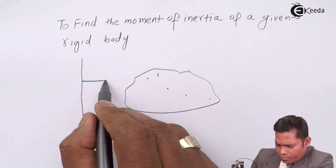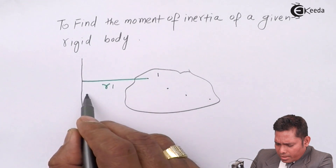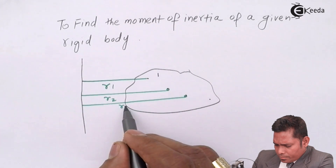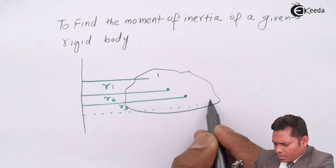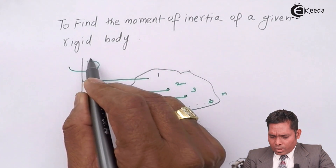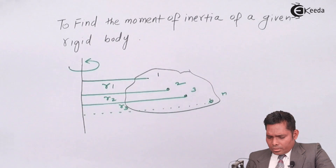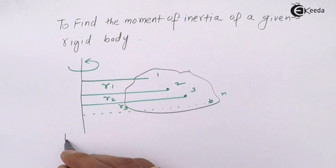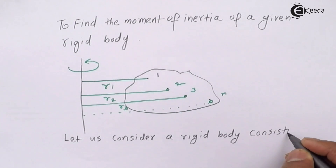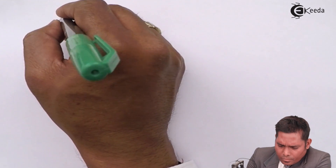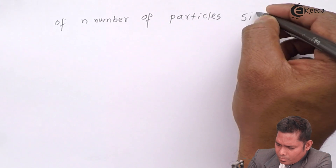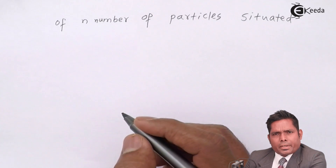Particle 1 is situated at a distance of R1 from the axis. Particle 2 is situated at a distance of R2, particle 3 at R3, and so on up to the nth particle at distance Rn. This is the axis of rotation and the body rotates around it.